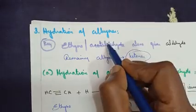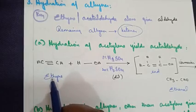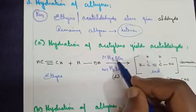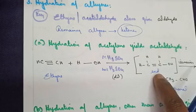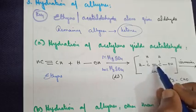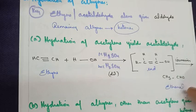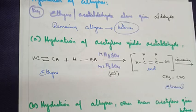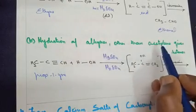Hydration of acetylene yields acetaldehyde. Ethyne (common name acetylene), when treated with water (HOH) in the presence of 1% mercury sulfate and 40% dilute sulfuric acid, we get an unstable intermediate — an enol: CH2=C(OH). The triple bond is converted to a double bond. Further, when isomerized, we get acetaldehyde (ethanal). The triple bond converts to a double bond, then to a single bond, giving us the carbonyl C=O, forming the aldehyde group.